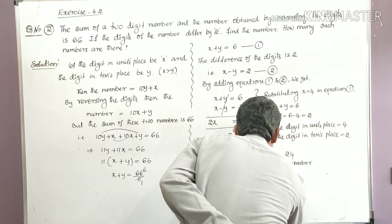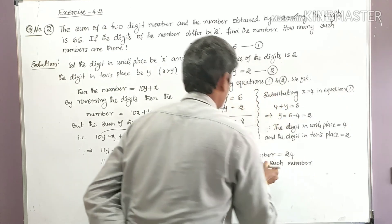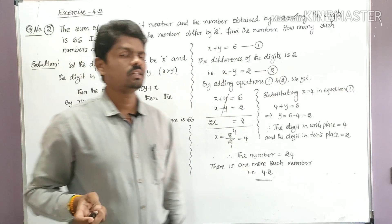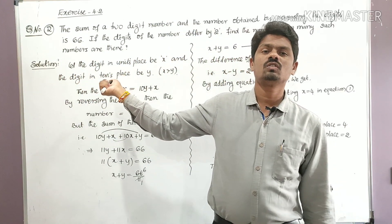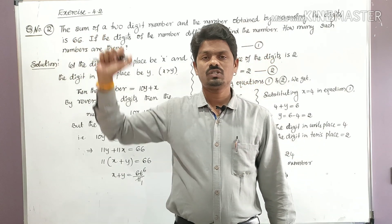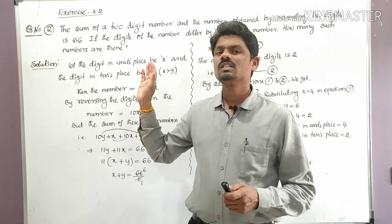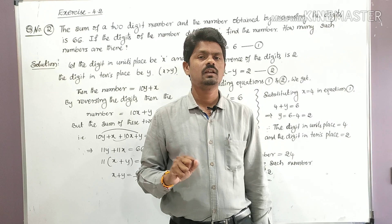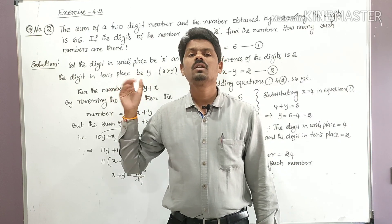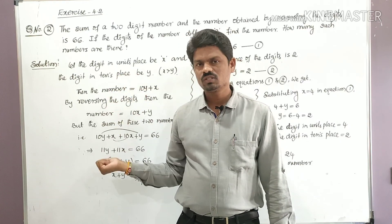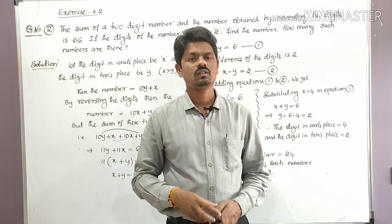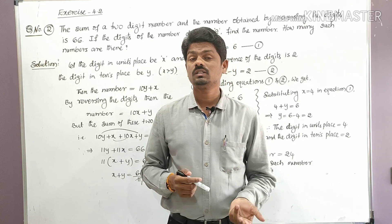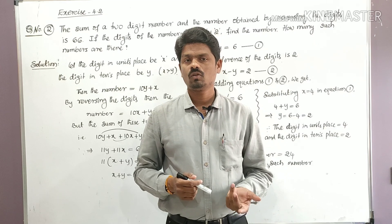Both 24 and 42 are correct answers. Like this, we can find the solution for a given situation in 'Pair of Linear Equations in Two Variables' — identify the unknown quantities, form equations, and solve them. To get the latest updates, subscribe to my channel, Learn More Maths by Varakumar.